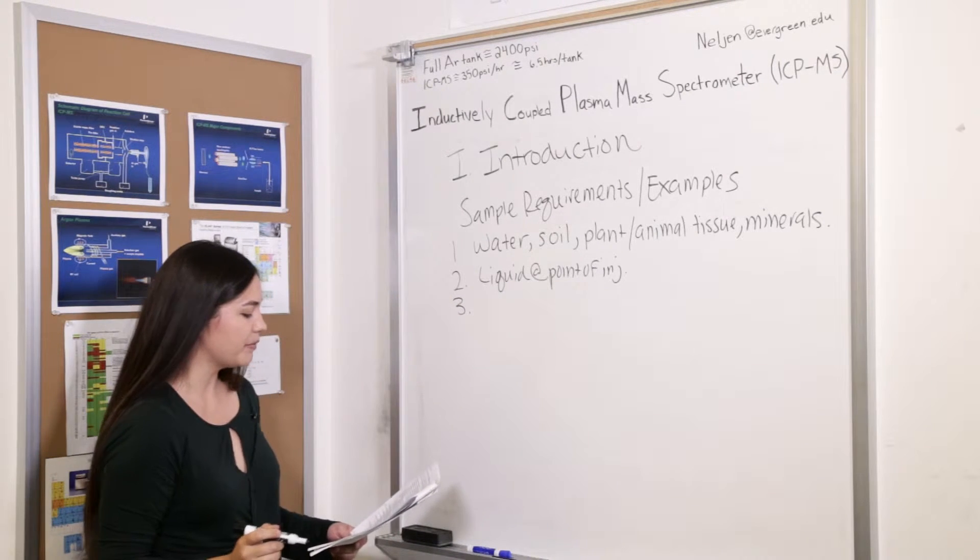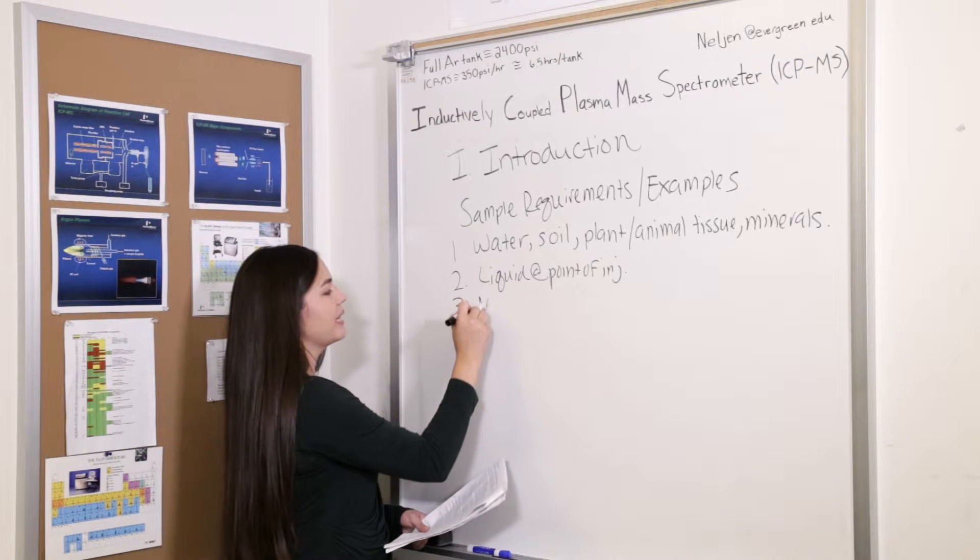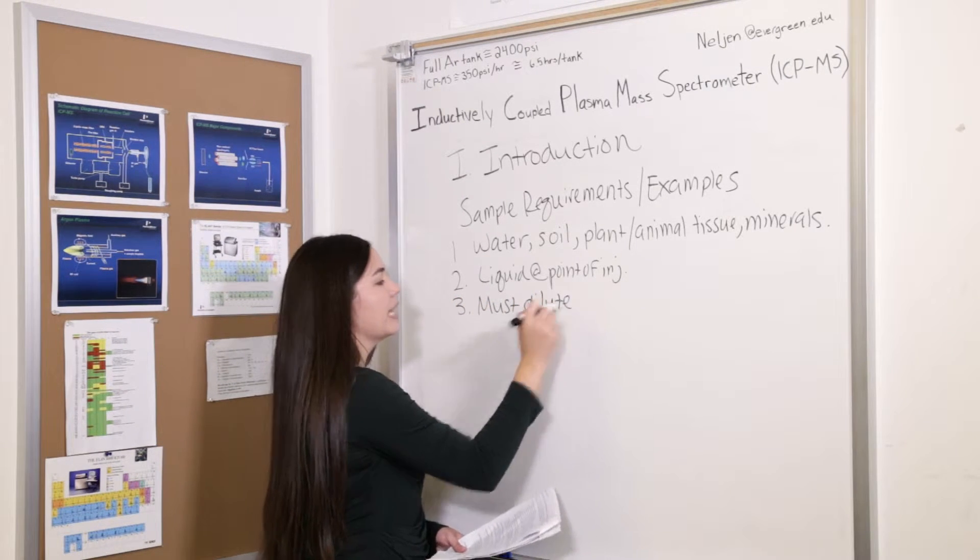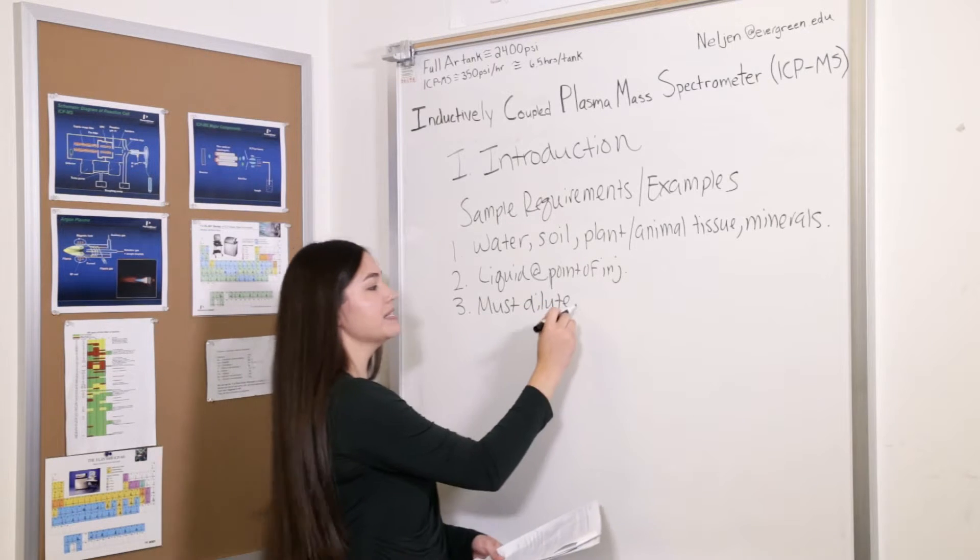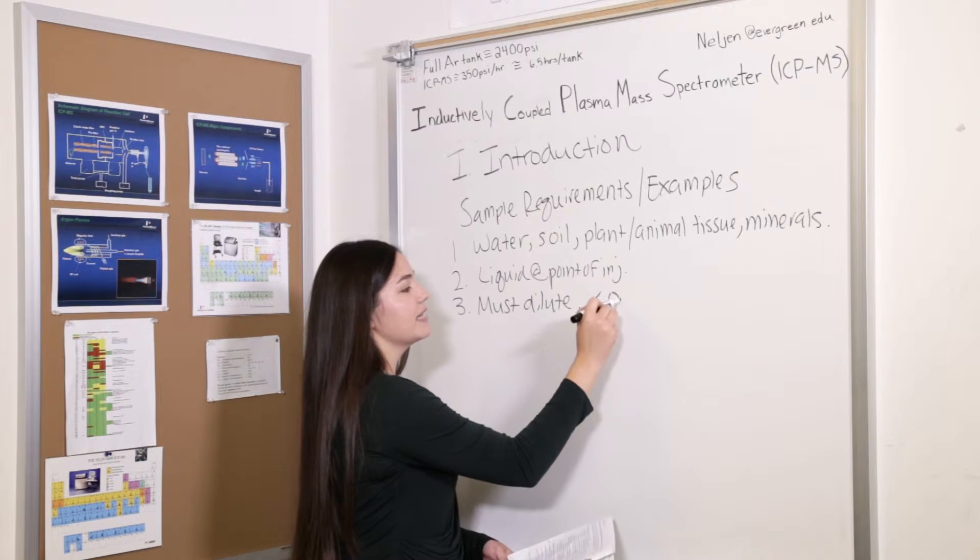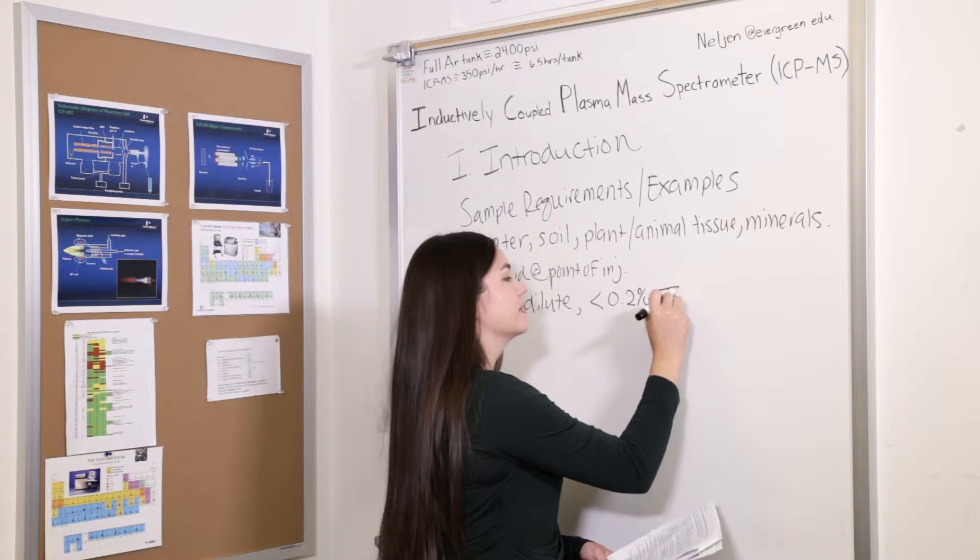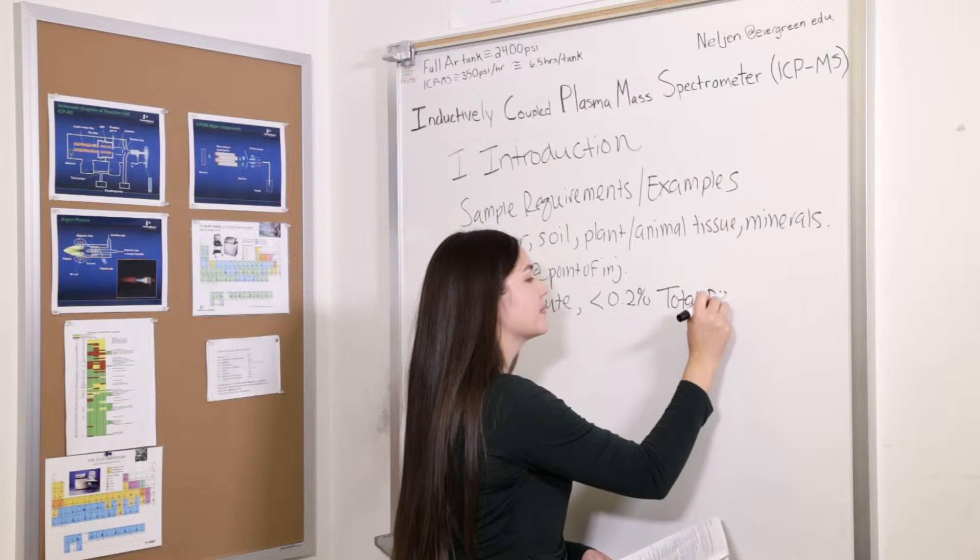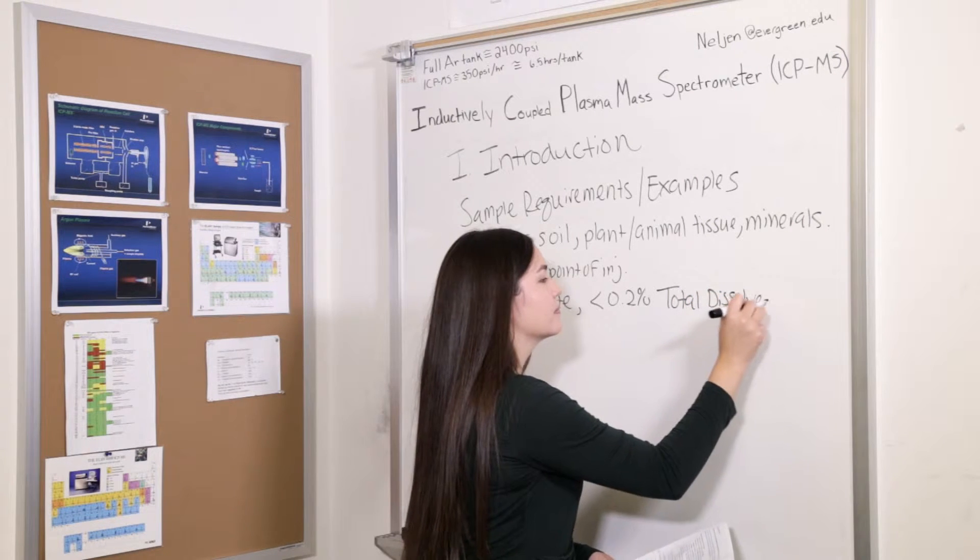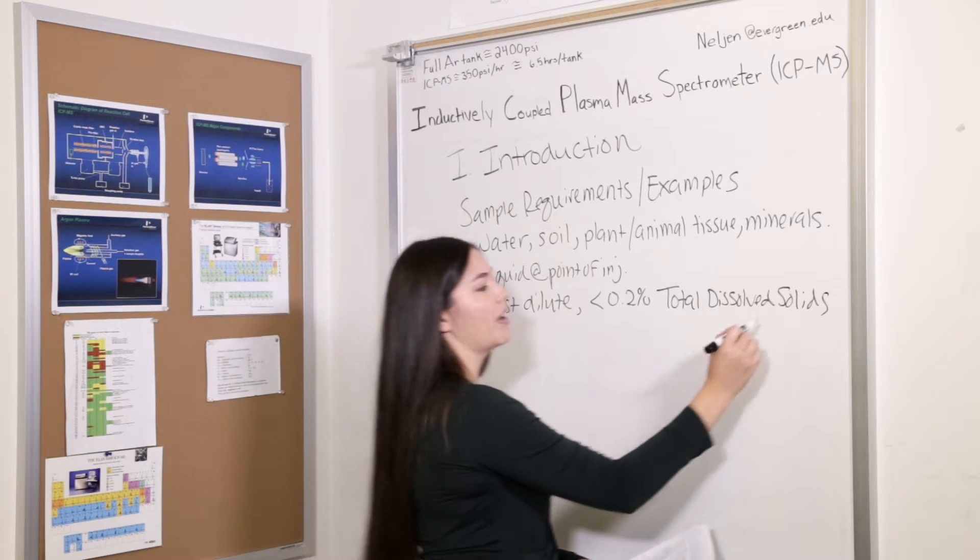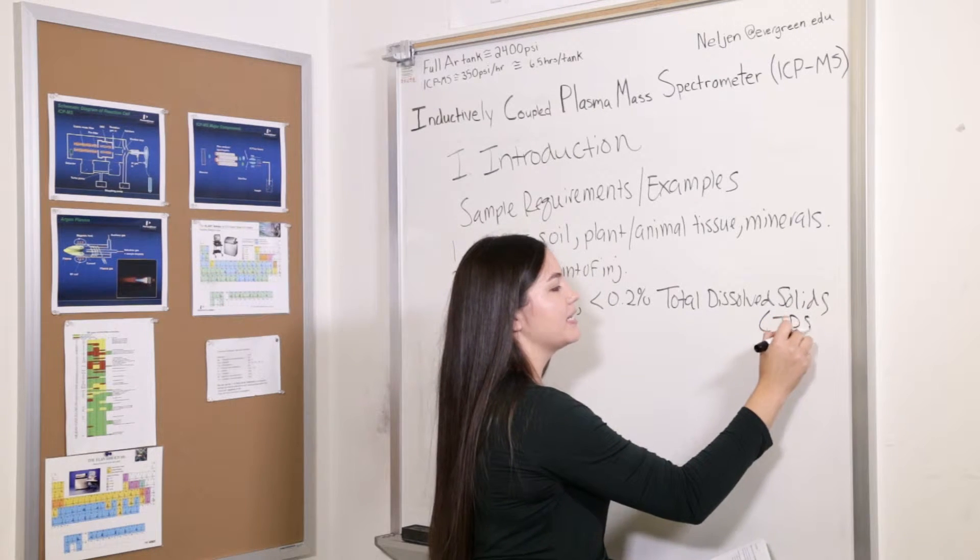The next sample requirement is that our samples must be dilute. And by dilute we mean it must have less than 0.2% total dissolved solids. Total dissolved solids is often abbreviated as TDS.